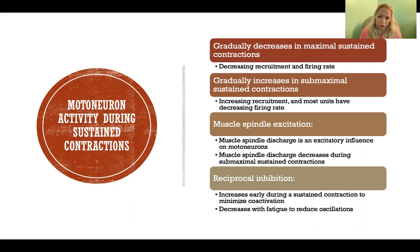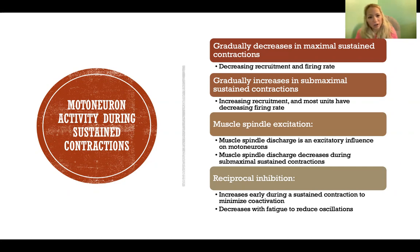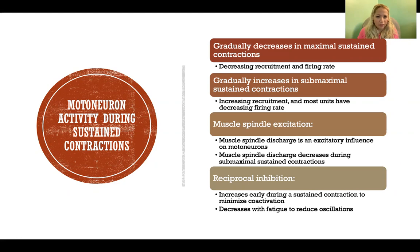In submaximal sustained contractions, where we're contracting to a less than maximal degree and sustaining that contraction, we have gradually increased recruitment — we recruit more and more motor units. Most of the units recruited have decreasing firing rates, including motor neurons recruited later in the ongoing contraction, and the majority recruited as we ramp up that contraction will also have decreasing firing rates.